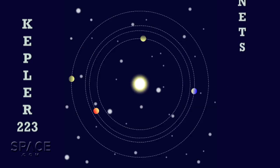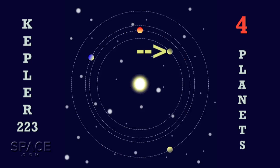Kepler-223 is home to four planets. Each time the innermost planet orbits the star four times, the second innermost planet orbits three times. Each time the second planet orbits the star six times, the third planet orbits four times.